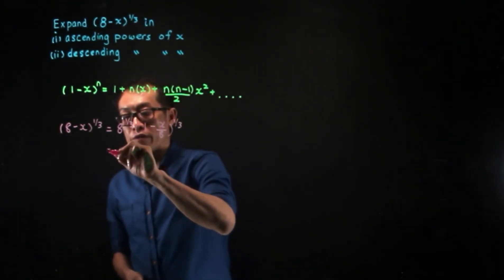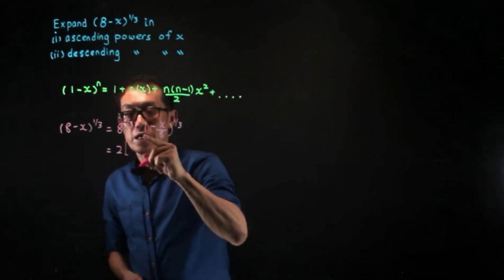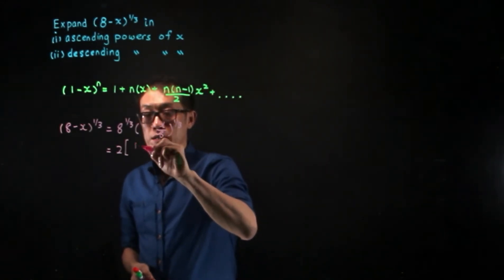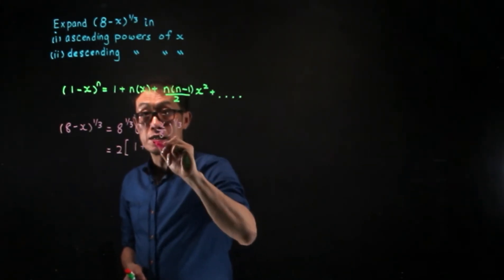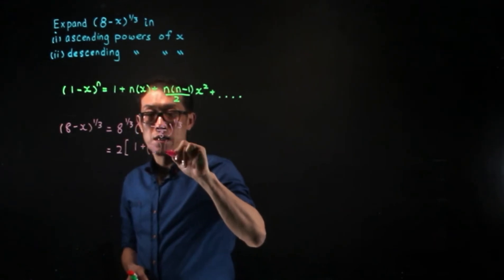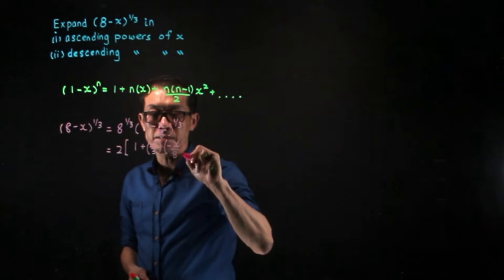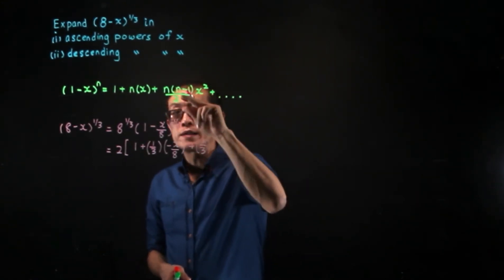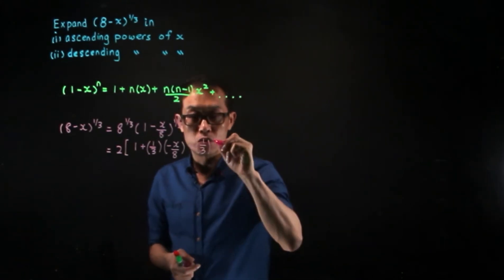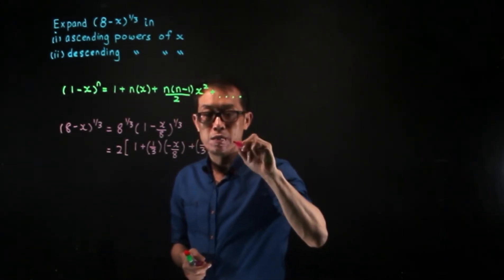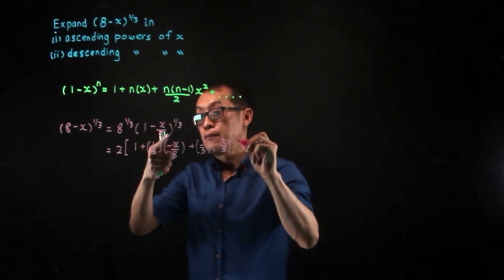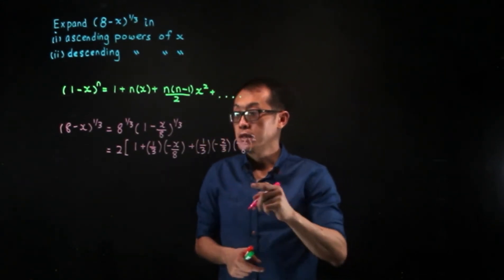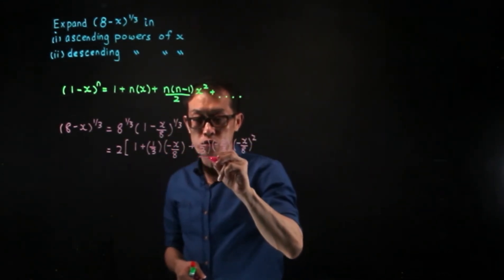So we have 2 times (1 minus X/8) to the one-third, and we can now apply the standard expansion with N equal to one-third and X replaced by minus X over 8. This gives: 1 plus (1/3)(−X/8) plus (1/3)(1/3 − 1) over 2 times (−X/8) squared, and so on. Note that 1/3 minus 1 equals minus 2/3, and we divide by 2 factorial which is 2.